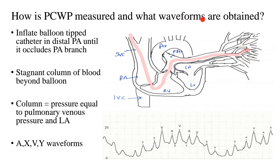What waveforms are obtained? The same waveforms seen in the right atrial pressure tracing are obtained in the wedge pressure tracing, because it essentially reflects the left atrium. Since it's an atrial pressure tracing, you get the four typical waveforms: the A wave, then the X descent, then the V wave, and then the Y descent — A, X, V, and Y.